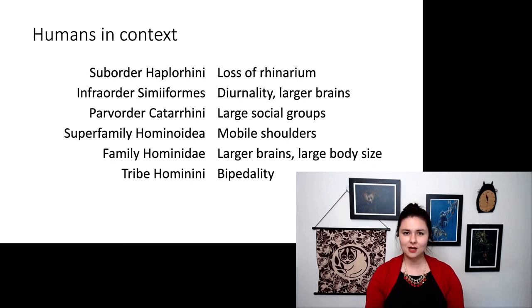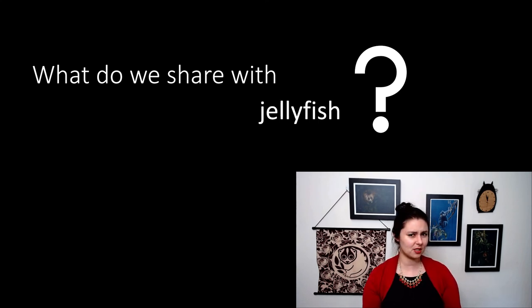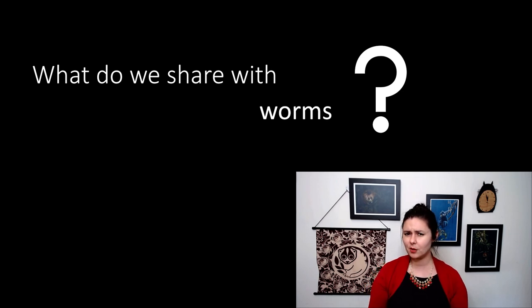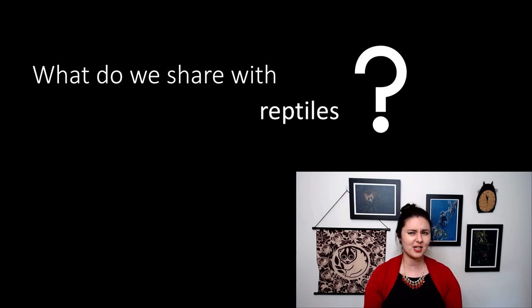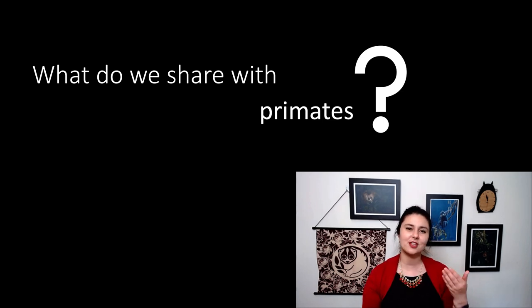So we talked about a lot, and we went through a lot of evolution in a very short period of time. So do you remember? What do we share with sponges? What do we share with jellyfish? What do we share with worms? What do we share with reptiles? And what do we share with other primates? It's helpful to go back and understand the different things we have and how far back some of these adaptations go.